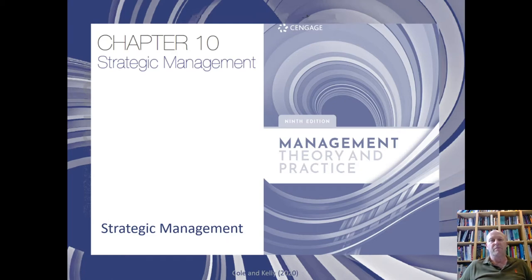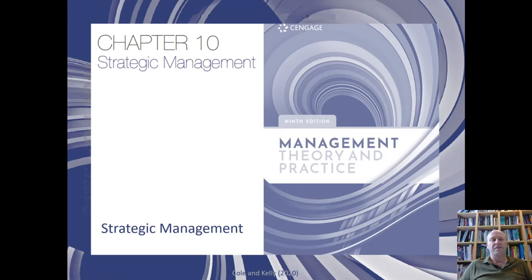In section two we complemented this with an alternative perspective focused much more on people and relationships. Together, both the human relations school and the classical management school were still really about work. Then around the mid-20th century, section three focused on systems theories and contingency theories — really about how the way you manage depends on the situation, moving us from earlier perspectives to one that recognizes the need to align with the environment.